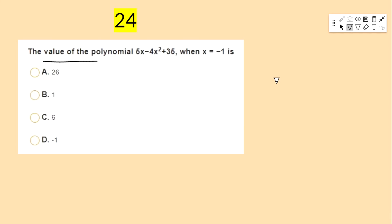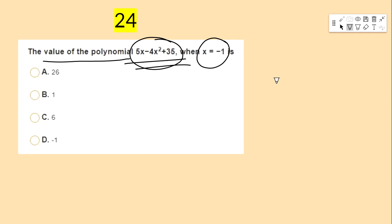The value of the polynomial 5x − 4x² + 3 when x = −1 is — options: 26, 1, 6, −1.